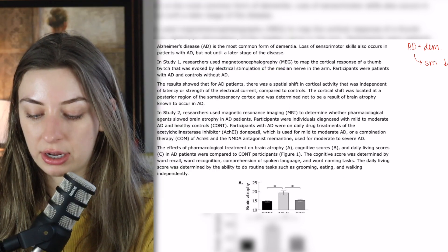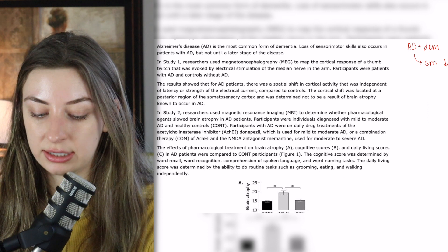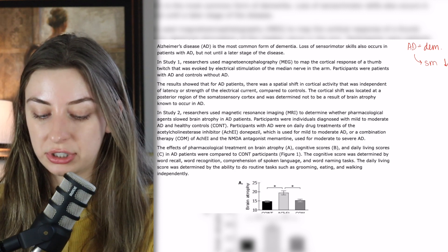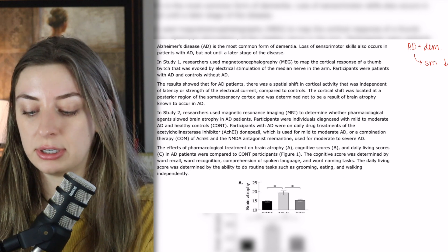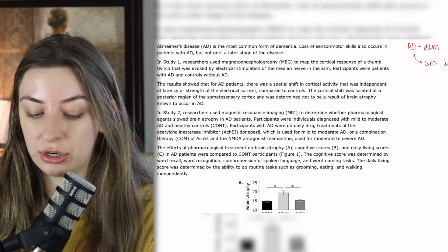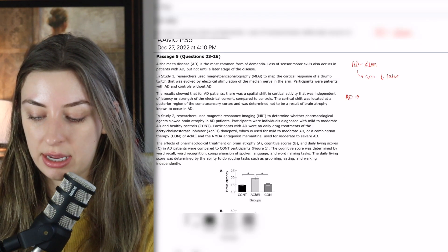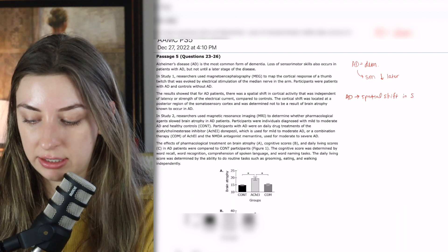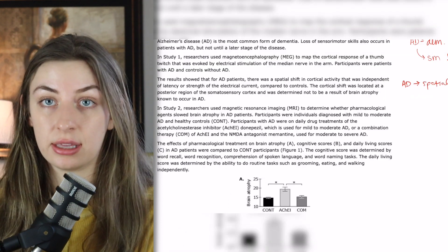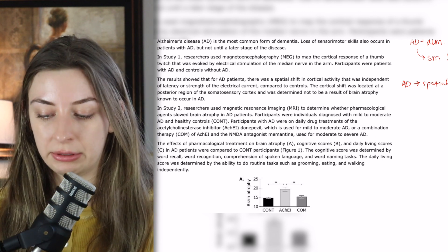The results showed that for Alzheimer's patients, there was a spatial shift in cortical activity that was independent of latency or strength of the electrical current compared to controls. The cortical shift was located at a posterior region of the somatosensory cortex and was determined not to be the result of brain atrophy. So Alzheimer's patients had a spatial shift in the somatosensory cortex — that's the main takeaway from that paragraph.